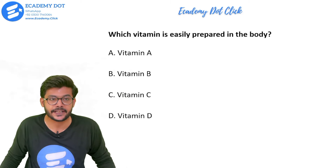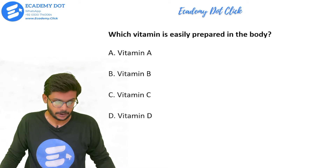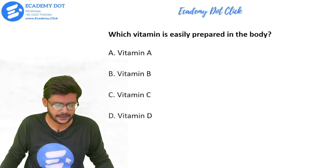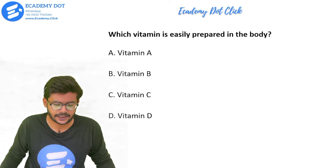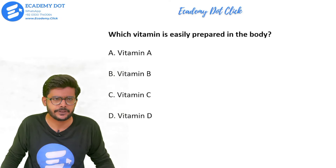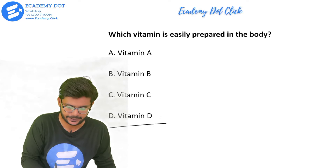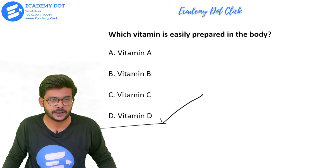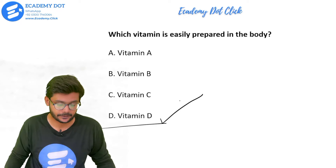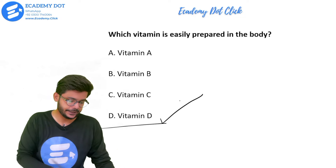Which vitamin is easily prepared in the body? All vitamins are usually obtained through supplements or nutrients from other sources — but which vitamin can be easily prepared in the body? Options are vitamin A, B, C, or D. The right answer is option D, vitamin D, which is synthesized through sun radiation — fats in the body decompose into vitamin D.